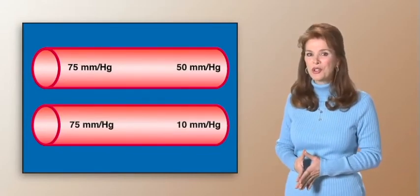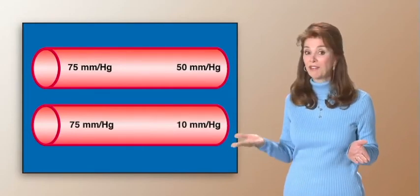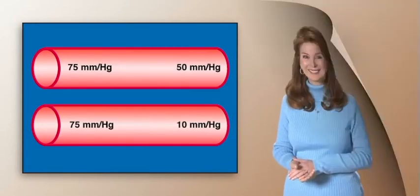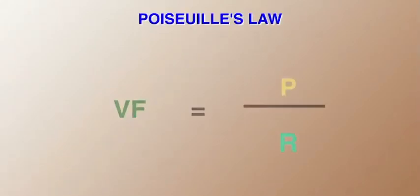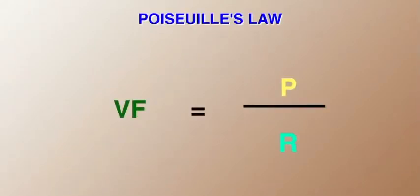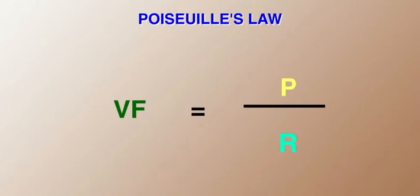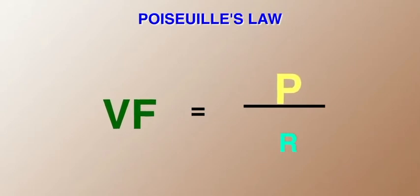Now let's take an even closer look at the relationship between pressure and flow. Poiseuille's Law is an equation that answers the question, how much blood is flowing through a vessel? Three factors play a part in this equation: volume flow, pressure, and resistance to flow. Volume flow is equal to pressure divided by resistance. You can see that volume flow increases with a pressure increase, or a resistance decrease.